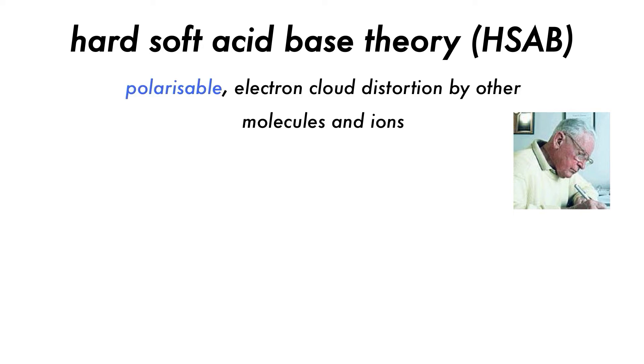A chemical species is said to be polarizable if their electron cloud can be distorted by other chemical species. For example, this gas phase anion will have a totally symmetric electron cloud, but if we introduce a cation, then the electron cloud will be distorted and electron density will be pulled towards the positively charged cation.